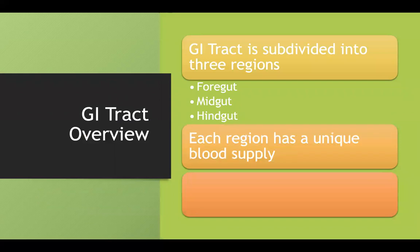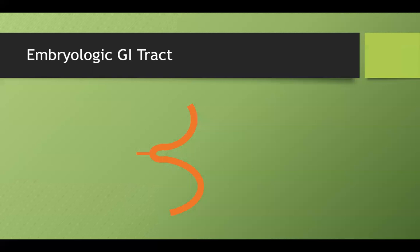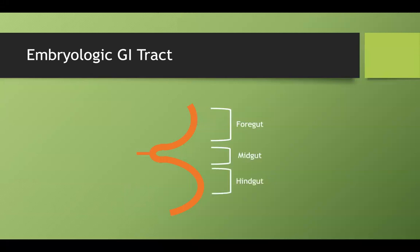Each of these regions has a unique blood supply and a unique set of nerves that innervate it. The reason each has a specific blood supply is because if we look back to embryology and a primitive GI tract, the foregut is located here, the midgut here, and the hindgut here.